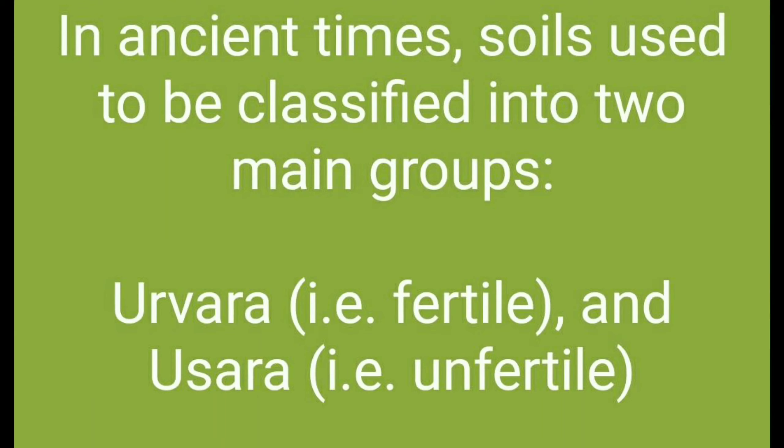If we talk about ancient times, soil was classified into two types only. First is urvara and second is usra. Urvara soil is fertile soil, and infertile soil is called usra.